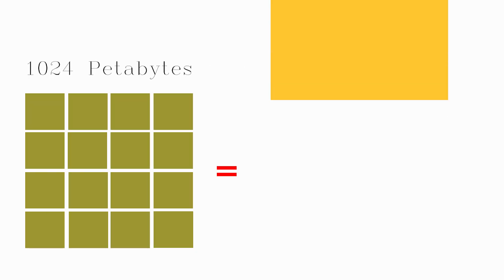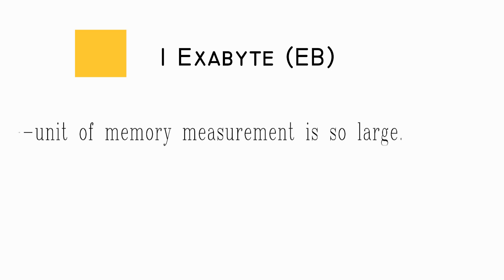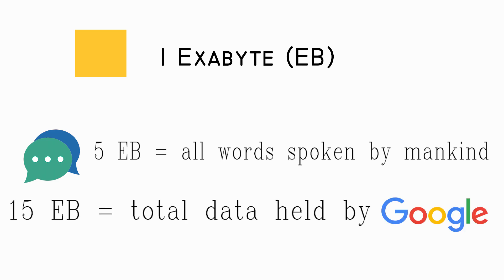After petabytes comes exabyte. The exabyte unit of memory measurement is so large that it is not used to measure the capacity of storage devices. Several hundred exabytes of data are transferred over the internet every year. 5 exabytes is enough space for all the words ever spoken by mankind. 15 exabytes is the total data held by Google.